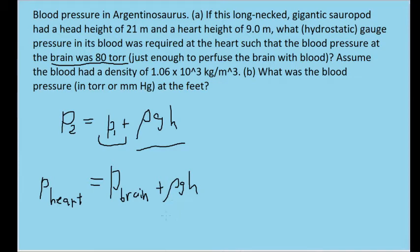For the pressure difference, we'll use the density of blood, 1.06 × 10³ kg/m³, and g = 9.8 m/s². For h, the depth, we'll use the difference in height between the head and the heart. The head height from the ground is 21 meters and the heart height is 9 meters, so h = 21 m - 9 m = 12 meters. That's the h we'll use for part A.